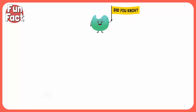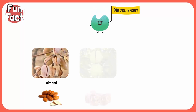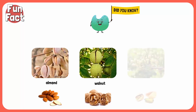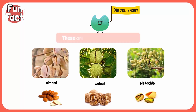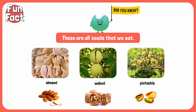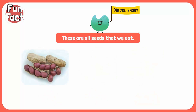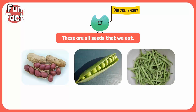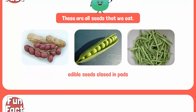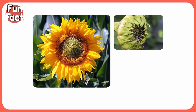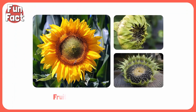Did you know that almonds, walnuts, and pistachios are seeds? This is why they have a thick, dry, and tough seed coat. Likewise, peanuts, peas, and beans are edible seeds enclosed in pods. Almost all flowering plants produce fruits, but not all their fruits are edible, such as the fruit of a sunflower.